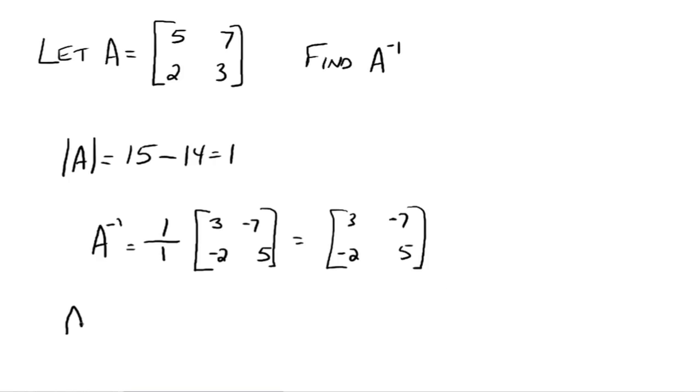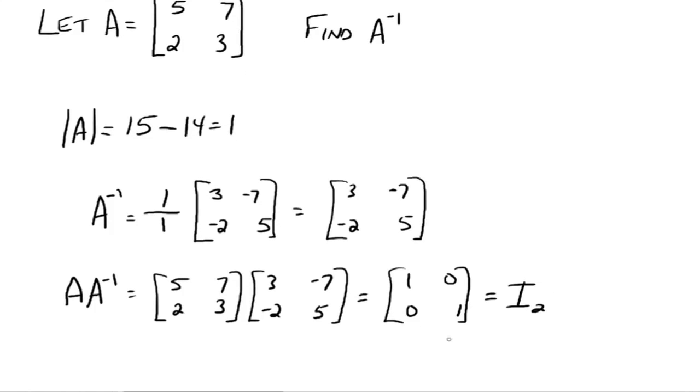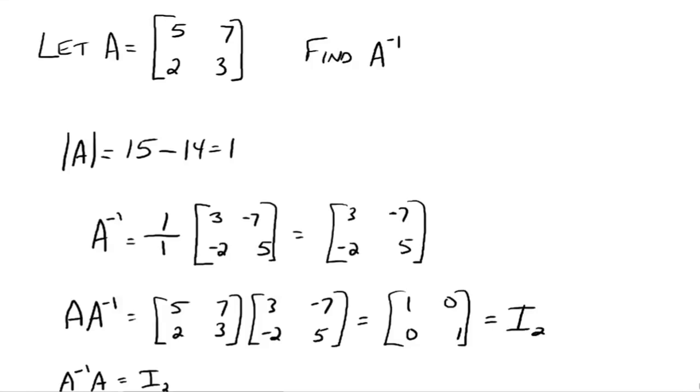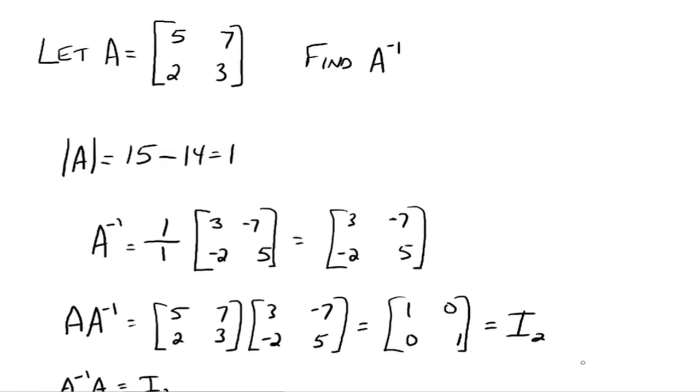Now, what do you think happens if you multiply A times A inverse? So you get 5, 7, 2, 3, and 3, negative 7, negative 2, 5. Multiply those out. What do you get? That's right, you get the identity back. Same thing would happen if you did A inverse times A. That would also give you the identity back. And you should verify that later. So, division of matrices is not defined, but using the inverse, taking a matrix and multiplying it by its inverse, that will get you back to the identity. That we can do.